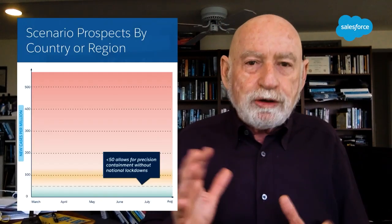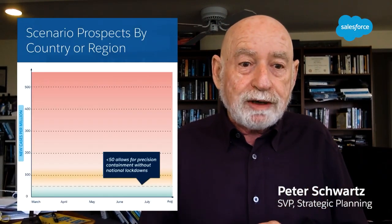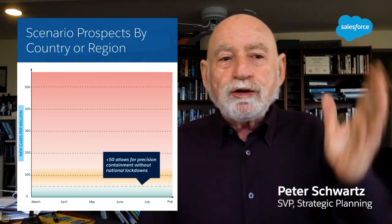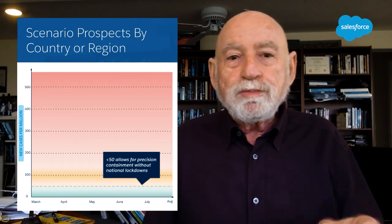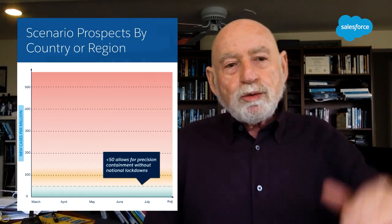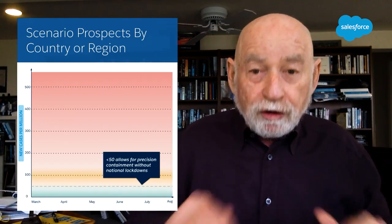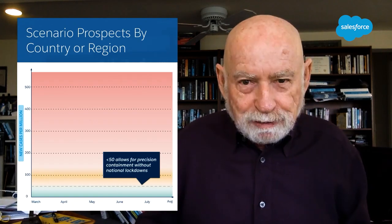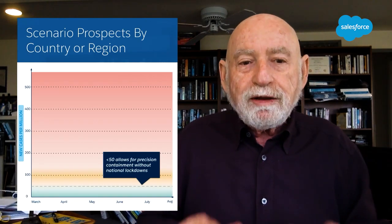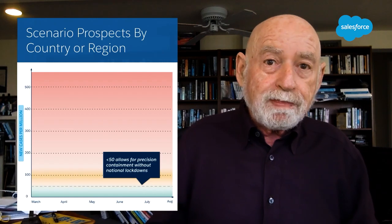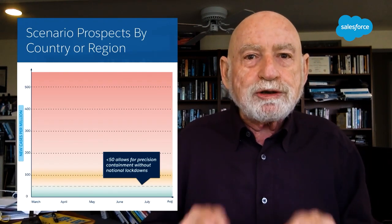This is the framework we're using to describe the future dynamics of the crisis. On the vertical axis is the number of new cases per million population. There are three zones of concern. The first is the green zone — the best place to be — where new cases are roughly below 50 per million, which means you can take precise measures to control it.